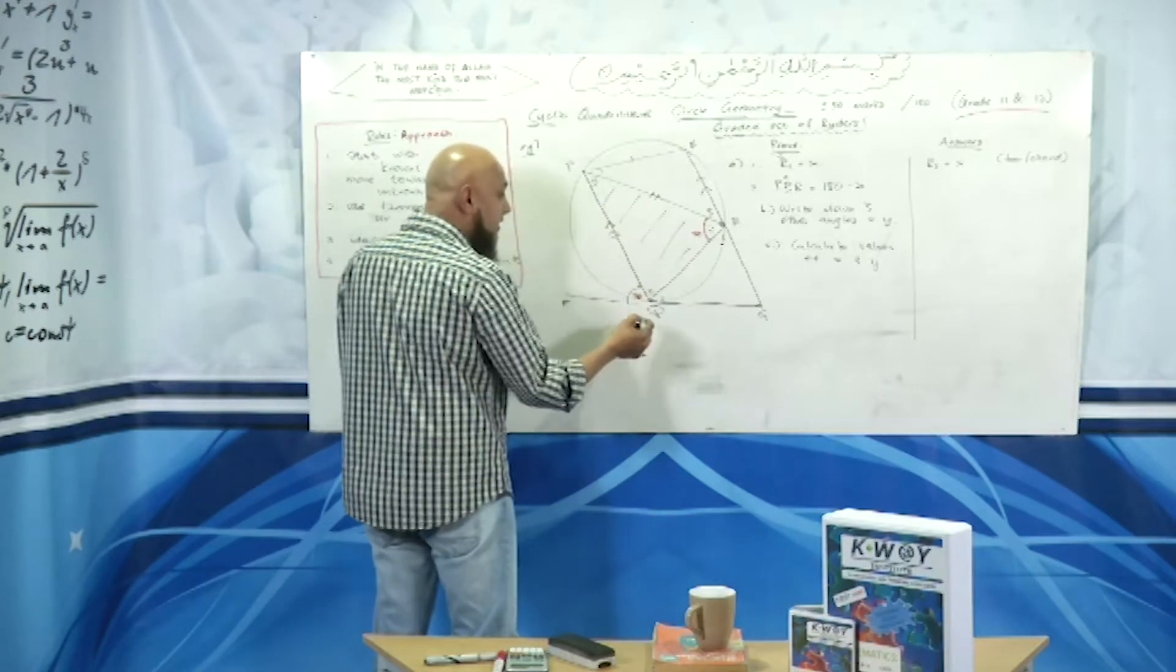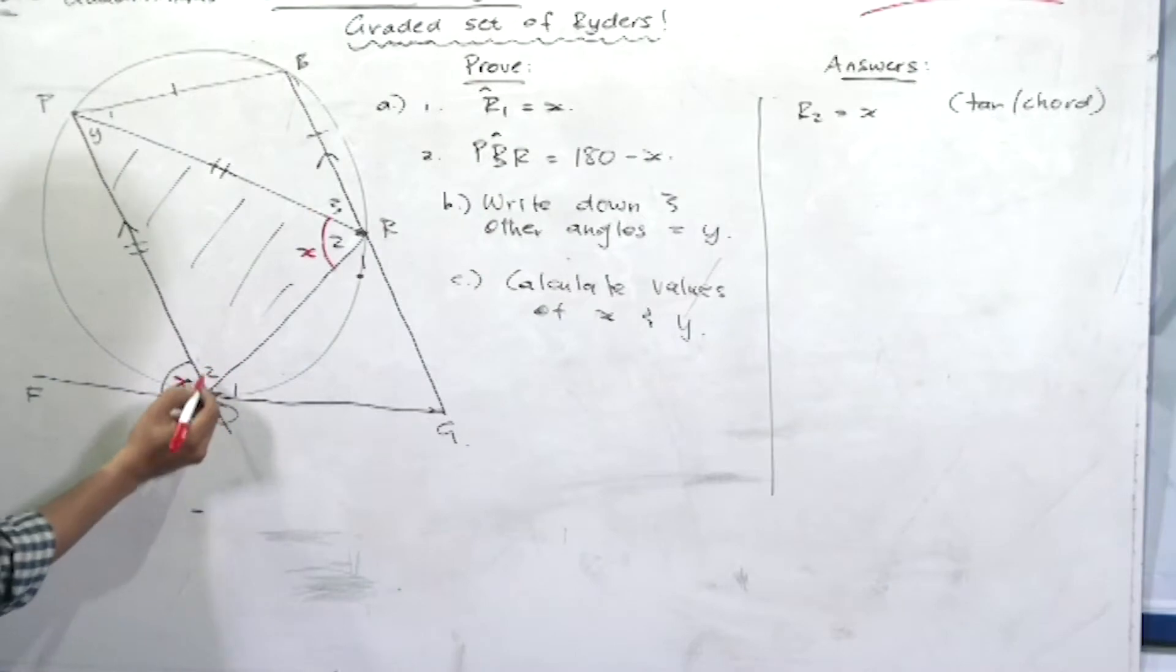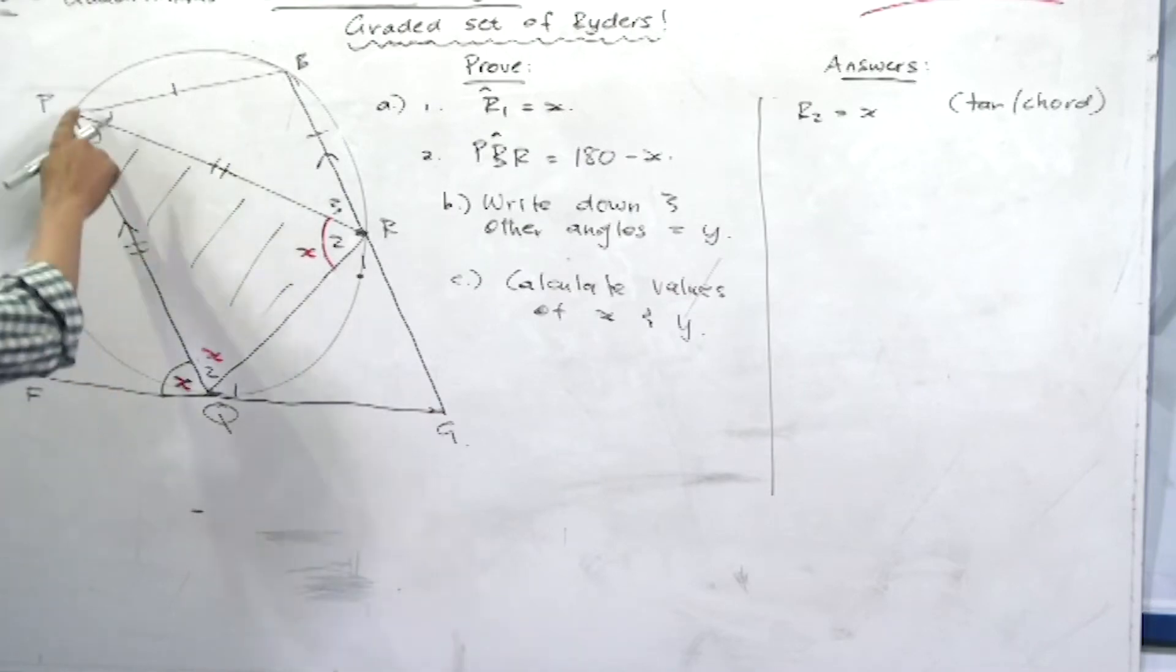Therefore, angle q2 must also equal to x because this line is equal to that line. These two angles must be equal. Okay, so now we've got angle q2. Let's now prove it to be an isosceles triangle.